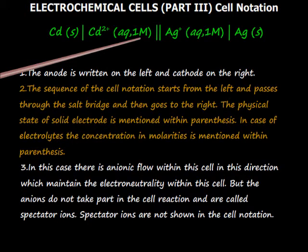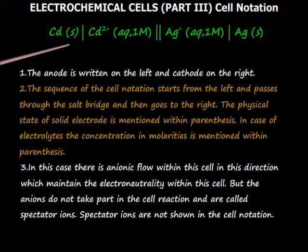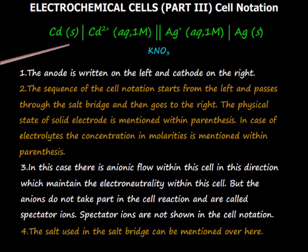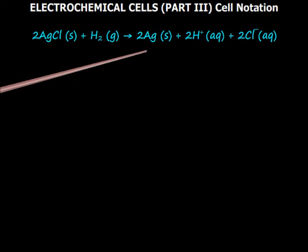In this case, there is anionic flow within this cell in this direction which maintain electron neutrality within the cell. But the anions do not take part in the cell reaction and are called spectator ions. Spectator ions are not shown in the cell notation. The salt used in the salt bridge can be mentioned over here. Let's come up with some other reactions.